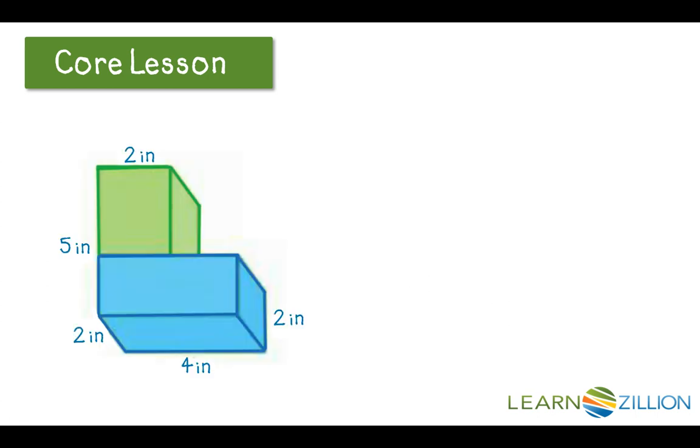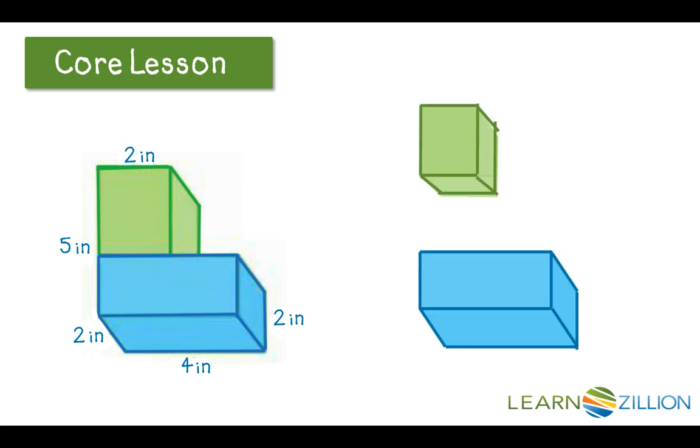Okay, our final example. We have a 3D figure, but it is composite. It's made up of two rectangular prisms. I'm going to start out by jotting down the information I do know onto the prisms that I've sort of broken apart. I've got the blue prism and the green prism.